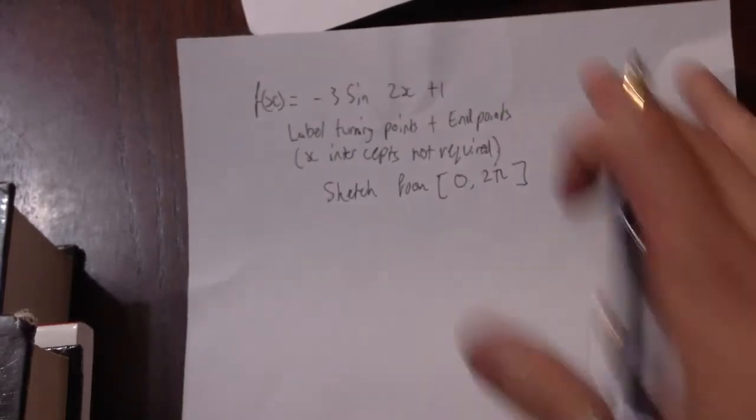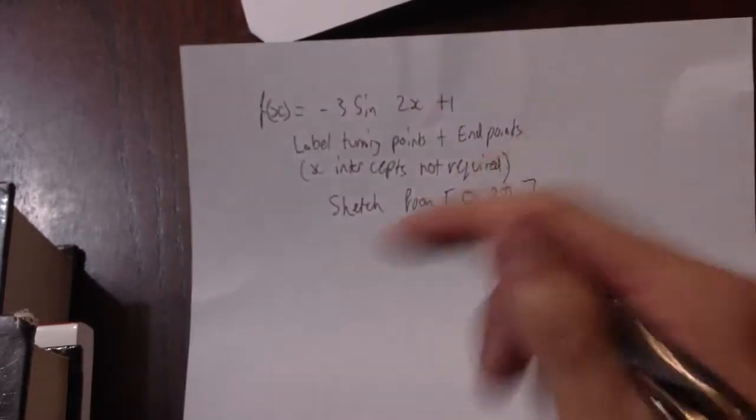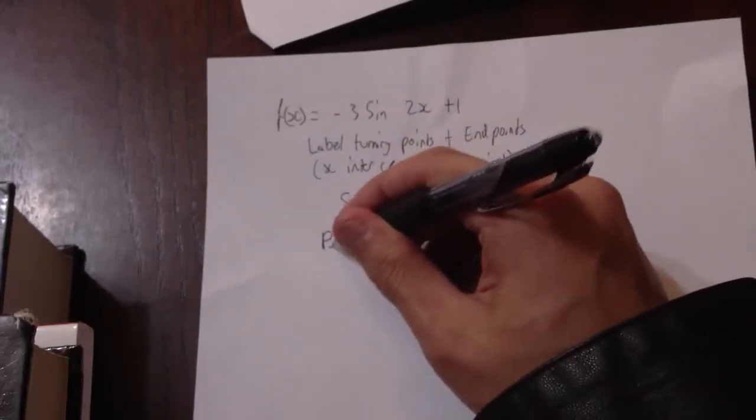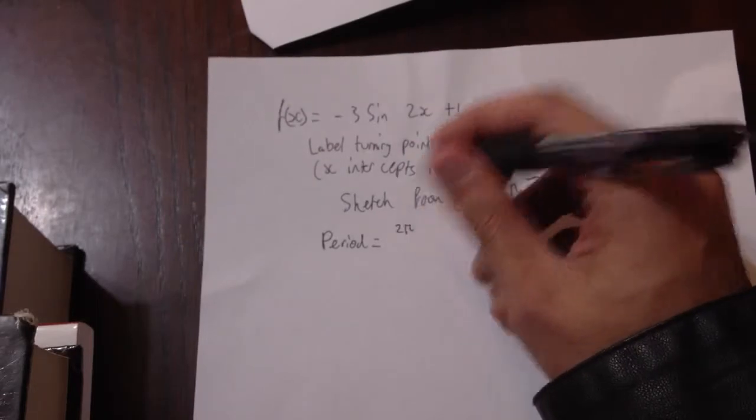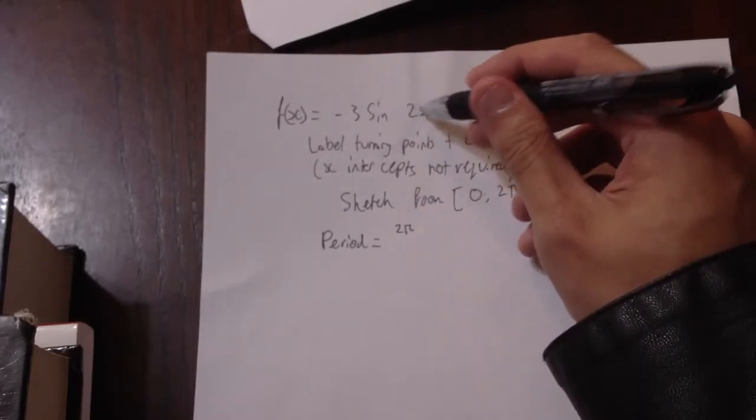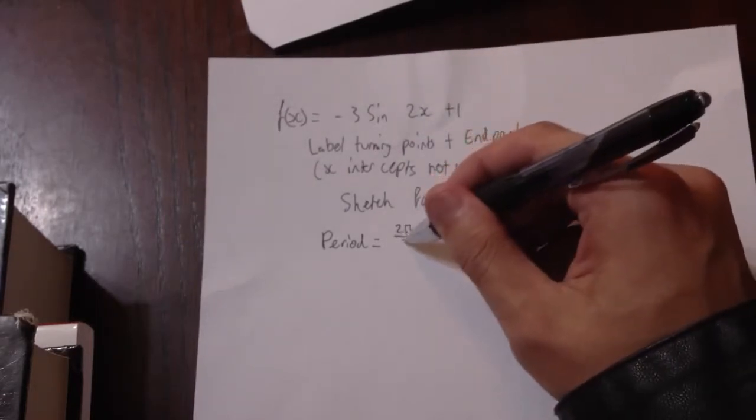How do we do this question? Well, important elements that we need: the period, which equals 2π over n, n being the number in front of x. Here it's 2, so the period is π.